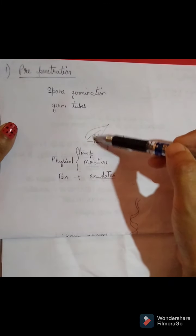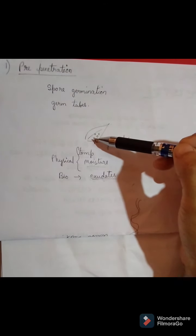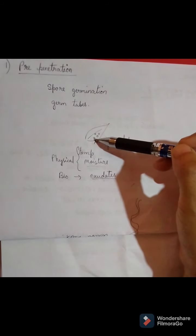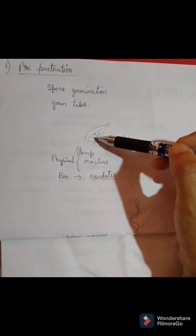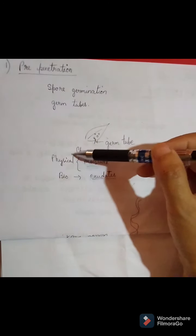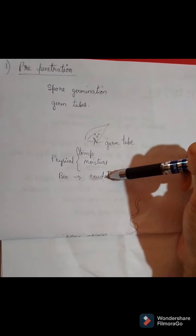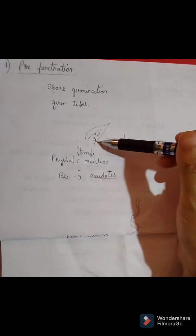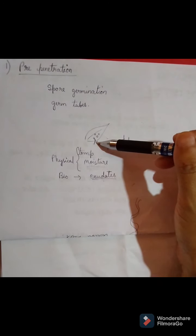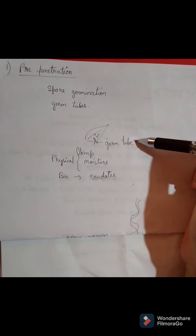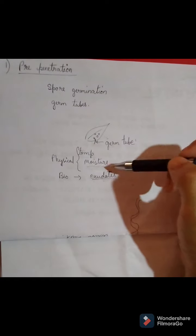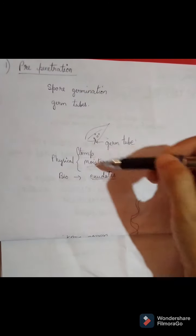When a spore comes in contact with a suitable host plant, physical factors such as temperature and moisture, and also biological factors such as plant exudates, all influence spore germination. They help in the formation of a germ tube.